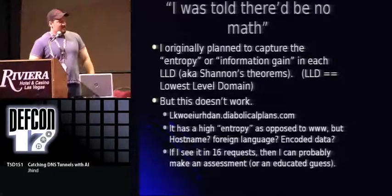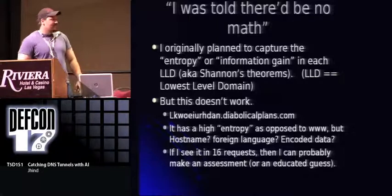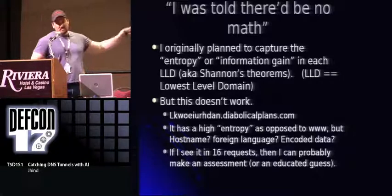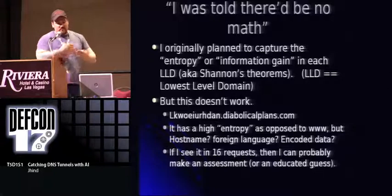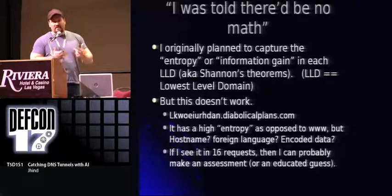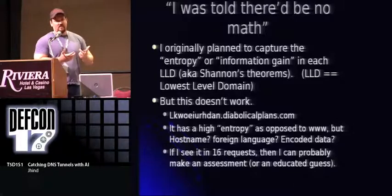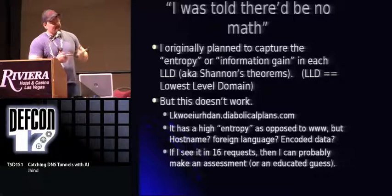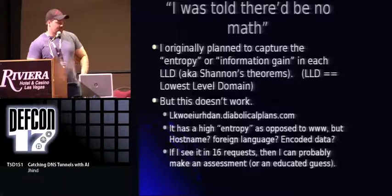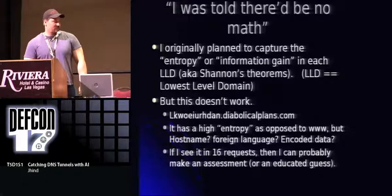My original plan was that words have a lower entropy than data, and I was going to figure out a scheme to measure this entropy and feed that to a neural network to make decisions based on this computer science equation of entropy. I spent a long time on that, and the slide exists because I think there's some value there, but I couldn't get it to work. It's not in the proof of concept.